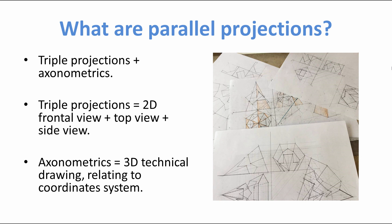Triple projections are 2D projections. For a triple projection you've got a frontal view, a top view, and a side view all working together. For an axonometric, this is obviously a 3D technical drawing. It's related to a coordinate system, just like the triple projection, and because it's a volume it could benefit from really interesting cast shadows.